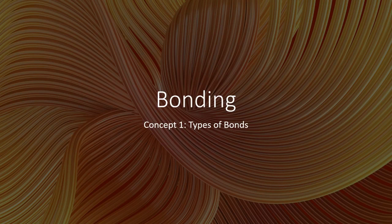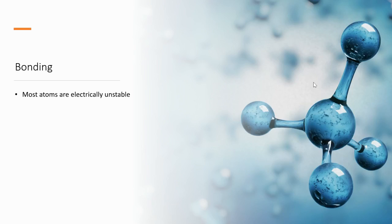We want to talk about why atoms bond and how they bond and the different types of bonds they form. Atoms form bonds because most atoms are electrically unstable. In other words, their electron cloud is not stable the way it is. This is because they do not have a full octet, meaning that they do not have eight valence electrons.